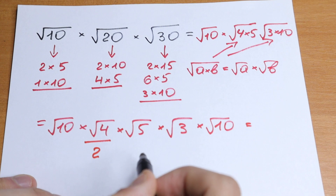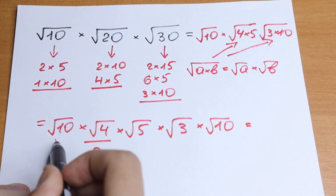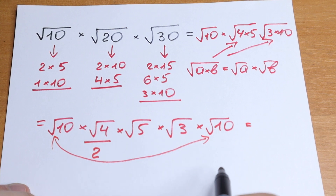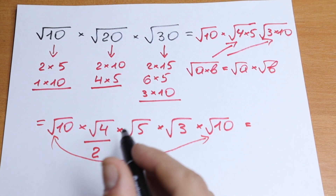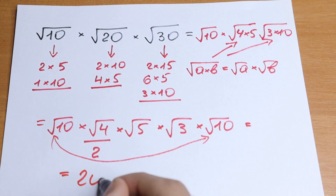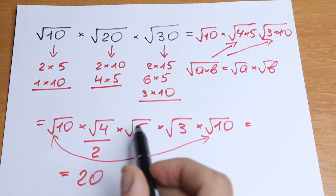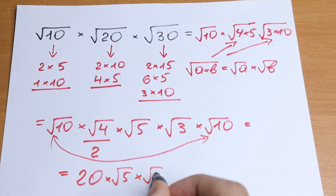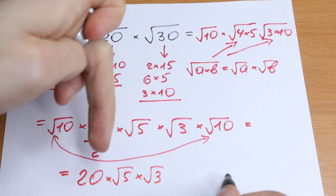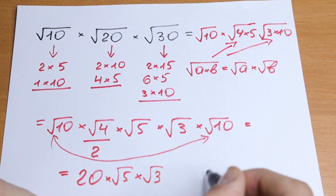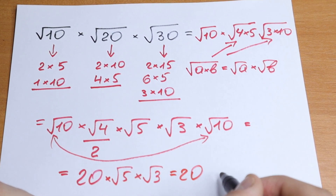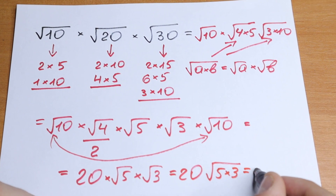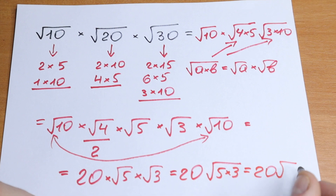This square root of 4 is equal to 2. And if we multiply square root of 10 with square root of 10, we get 10. So as a result we have 2 times 10, which equals 20. And we still have square root of 5 times square root of 3. Using the rule in reverse, we can combine them into one square root sign: square root of 5 times 3. So we get 20 times square root of 15.